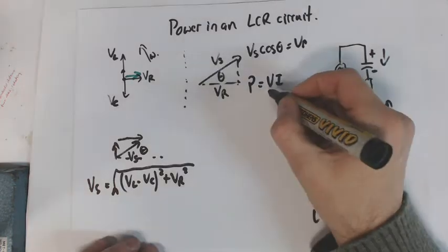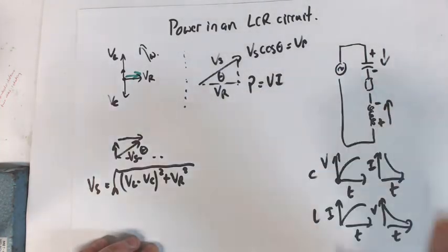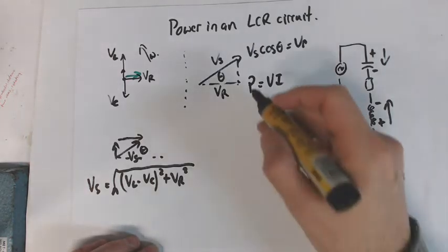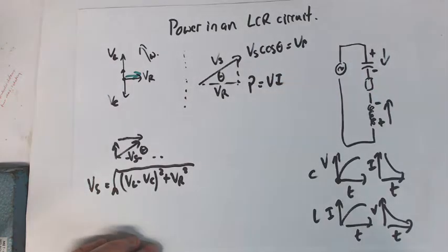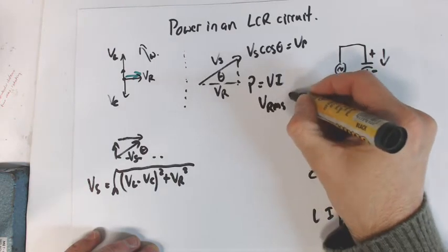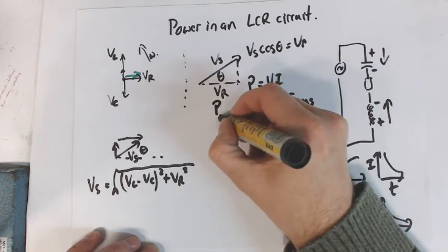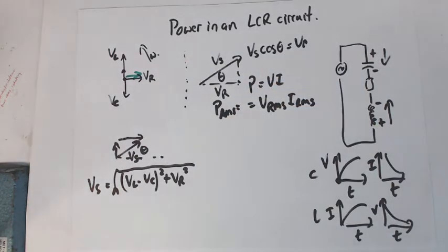So if we say that power equals that we've got to ask ourselves are we talking about RMS power or peak power? So if I use Vrms times Irms then I've got power RMS. There is a peak power though and that peak power is when we're looking at the peak value for the voltage and peak value for the current. So having said that, that's our power situation.